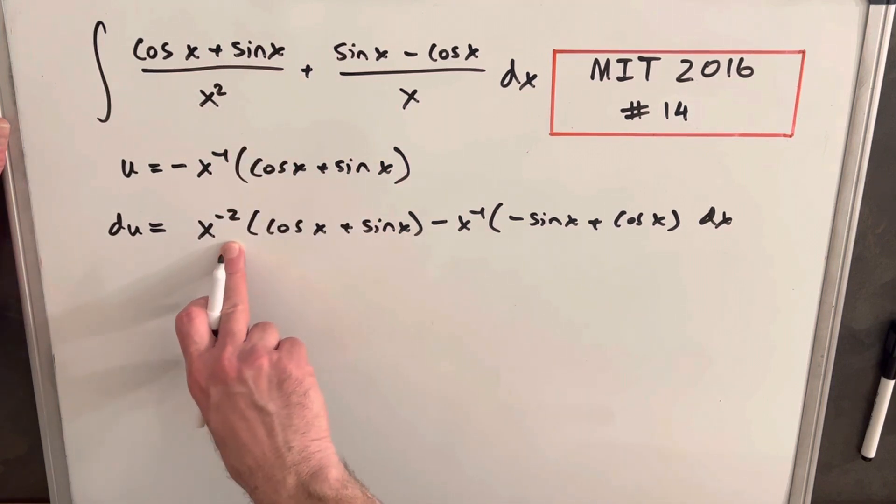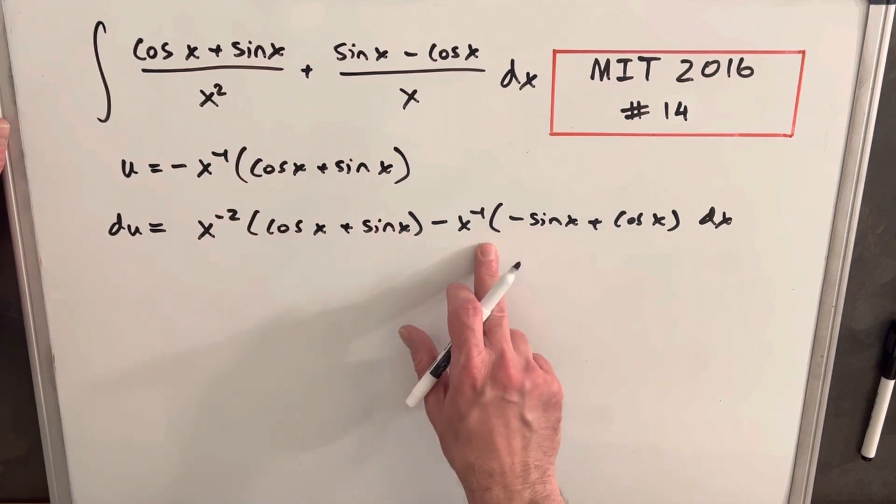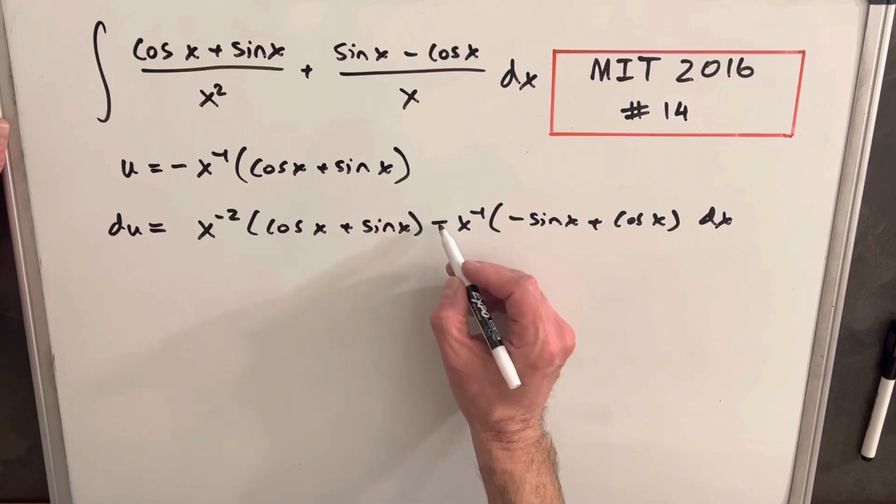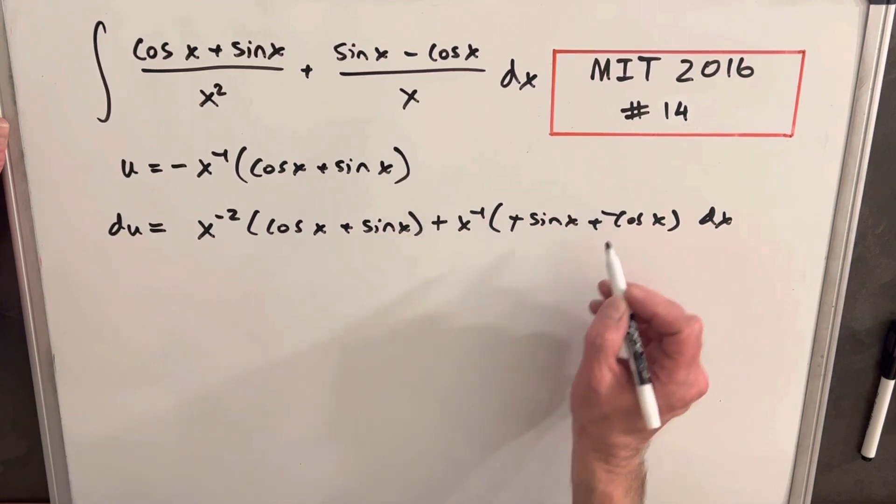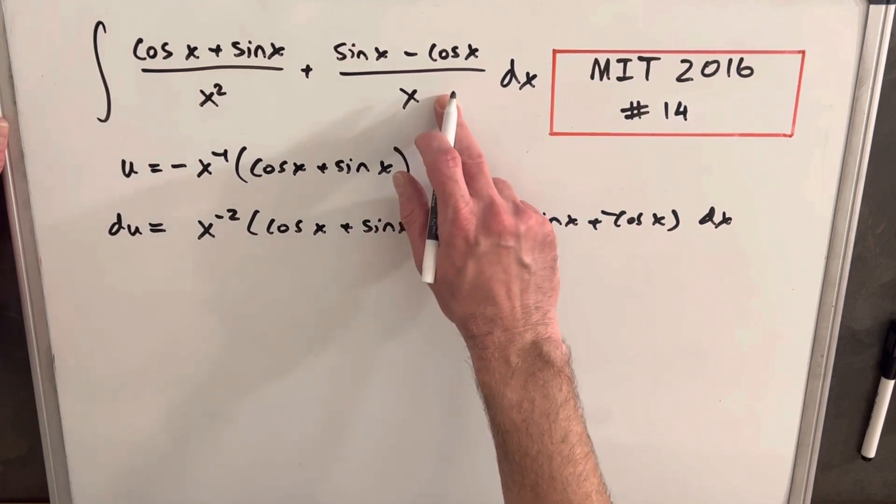We have our x squared in the numerator. And then here, if we cancel the minus sign, now we match this term exactly as well.